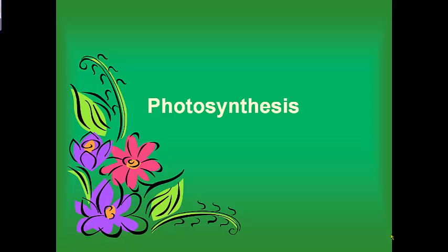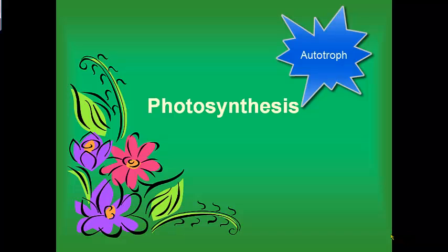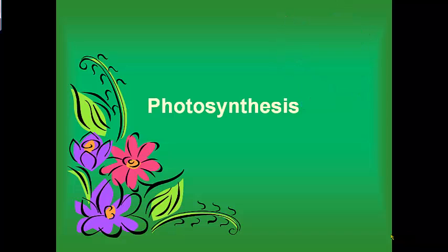Today we're going to talk about photosynthesis. Photosynthesis is basically a process where plants create their own food. When a plant creates its own food, it's known as an autotroph. Auto means self, and troph means to create, so it's creating food by itself. A plant only needs the sun and certain other elements to create its own food — it doesn't have to hunt or find food in the environment.